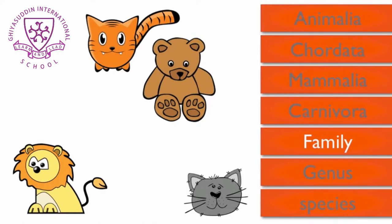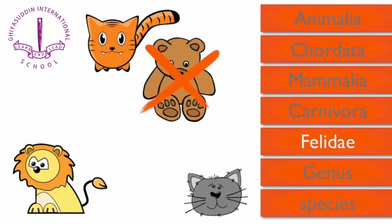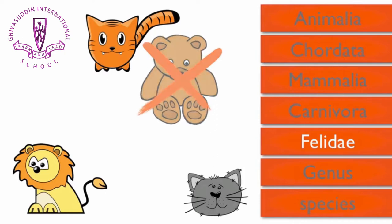Next we have family. A lion is in the family called Felidae. Members of this family have retractable claws, so the bear is removed.